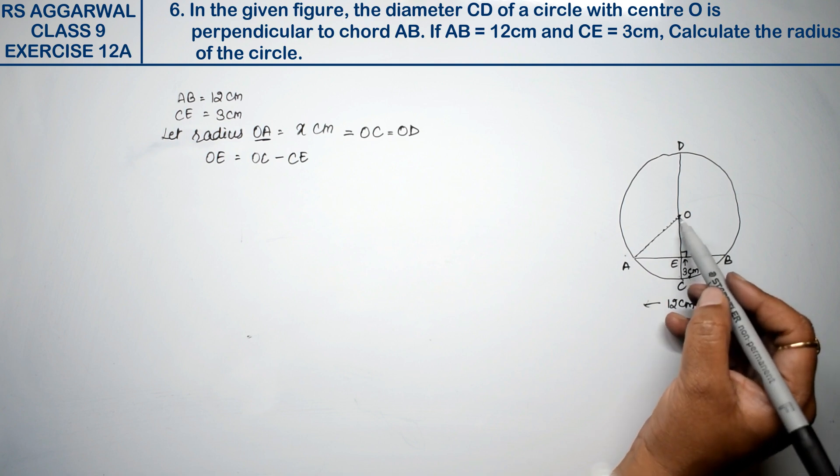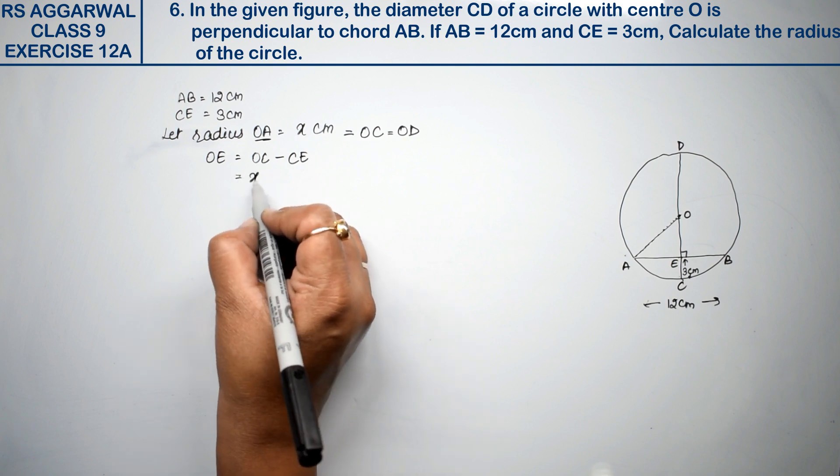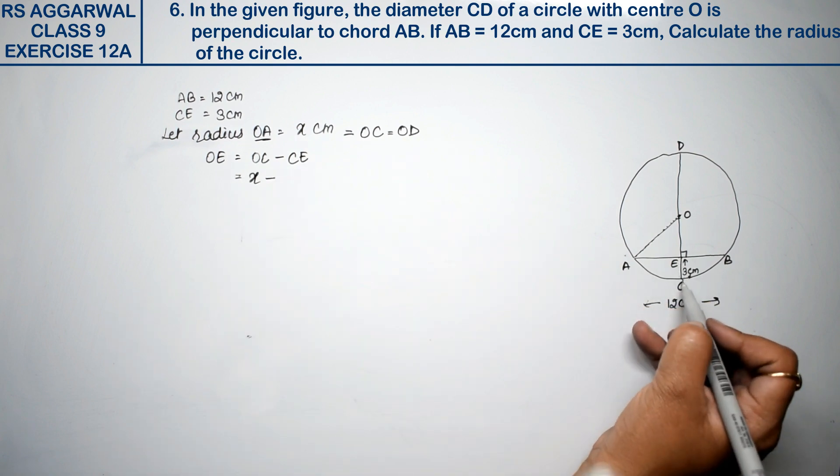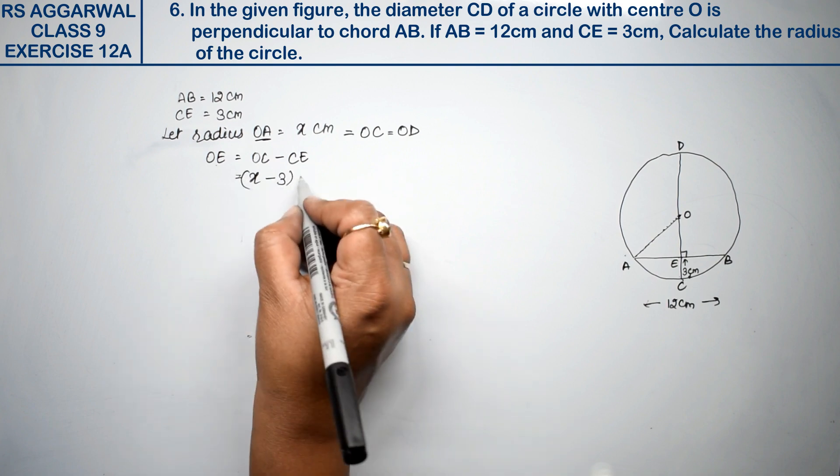It will be x and x. So now, how much is OC? x. And how much is CE? 3. So what happened to OE? It is x minus 3.